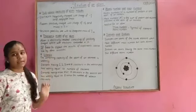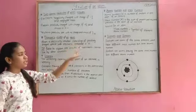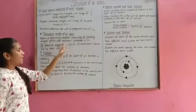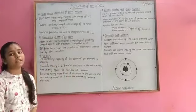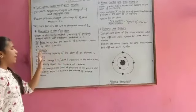Thomson's model of an atom. Atom is electrically neutral consisting of positively charged sphere with electrons embedded in it. It failed to explain the results of experiments carried out by other scientists.